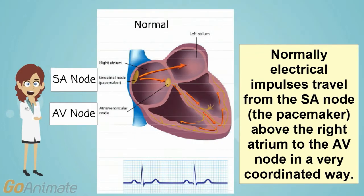Normally, electrical impulses travel from the SA node — which is the pacemaker of the heart, located above the right atrium — to the AV node in a very coordinated way.